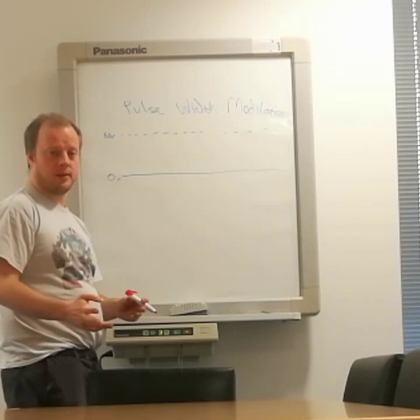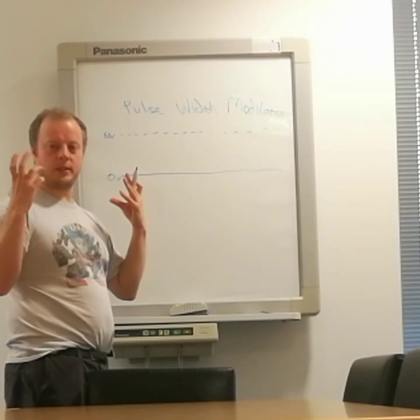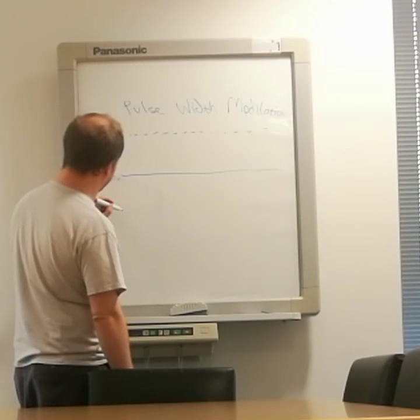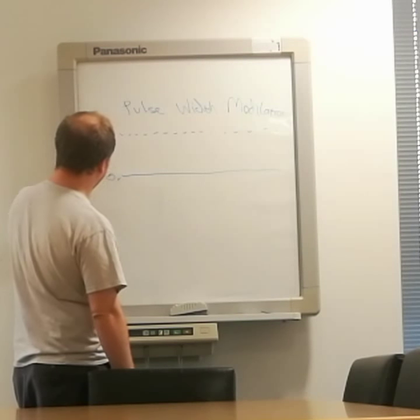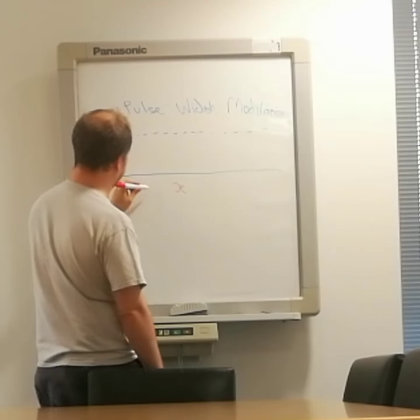Instead, the digital way to do it is to cut how long you've got the electricity turned on to the motor for. I'll show you what I mean. We've got voltage levels on a y-axis and on the x-axis we have time.